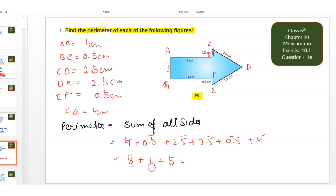So here 8 plus 1 is 9, 9 plus 5 is 14. So the perimeter is 14 cm. I hope it will be clear to you.